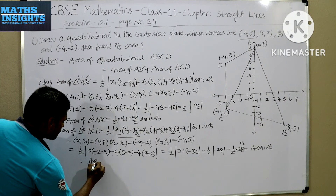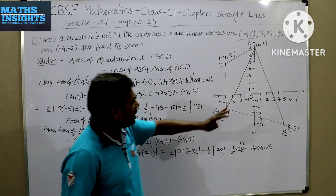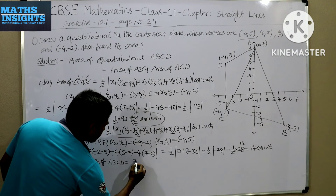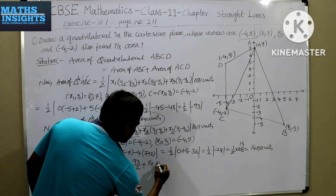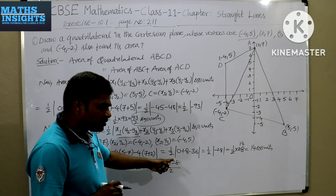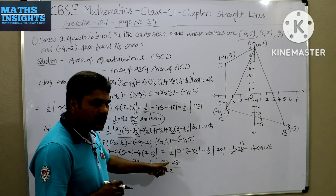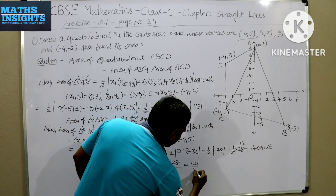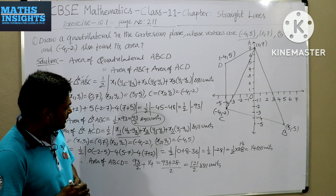Therefore, area of quadrilateral ABCD equals area of triangle ABC plus area of triangle ACD = 93 by 2 plus 14 = 93 by 2 plus 28 by 2 = 121 by 2 square units. This is the area of the quadrilateral ABCD. In this way, you may calculate the area of whatever type of quadrilateral is given.